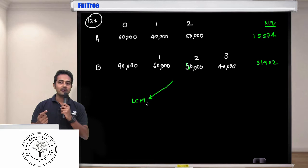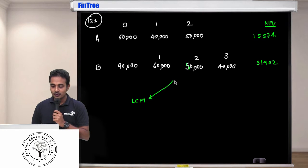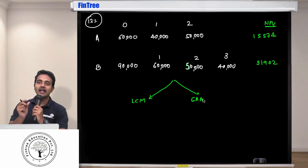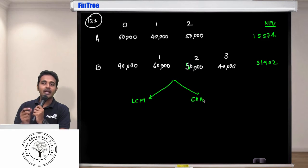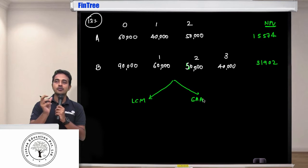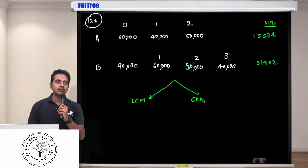Then calculate NPV and then choose the one which has a higher NPV. Or you use EAA method, which is equivalent annual annuity method. Both the methods will always get you the same result. If LCM says choose project A, then EAA will also tell you to choose project A.